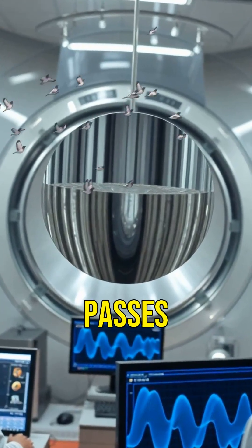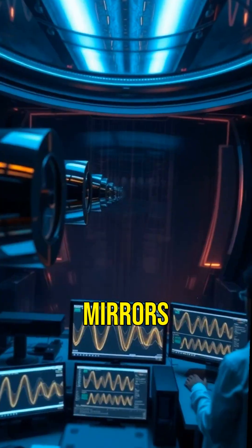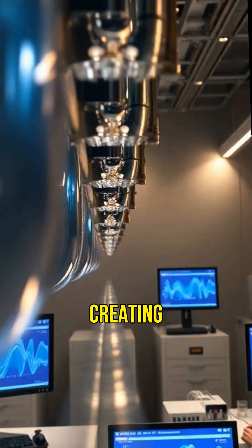When a gravitational wave passes, it briefly alters the distance between the mirrors in the interferometers, creating a pattern we can analyze.